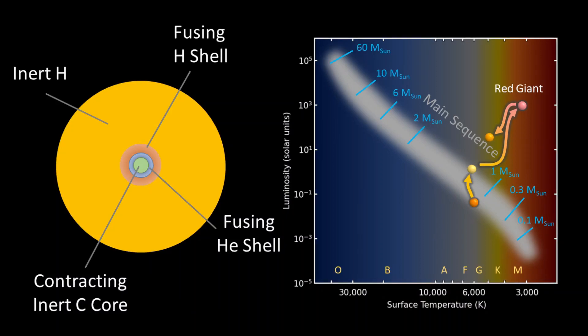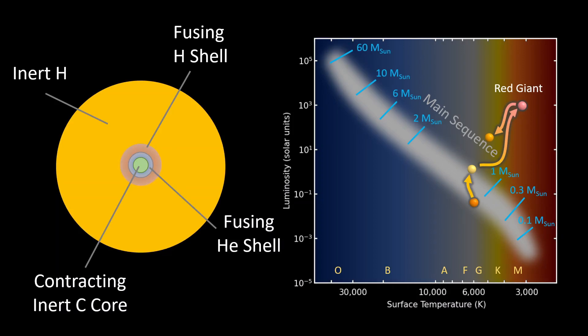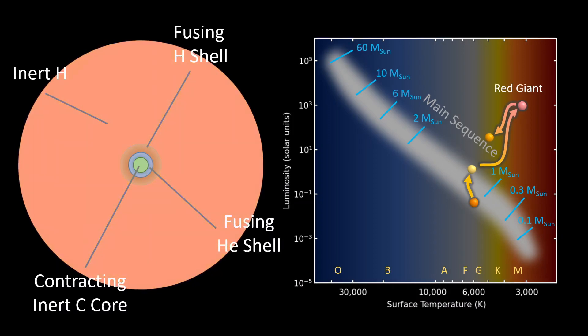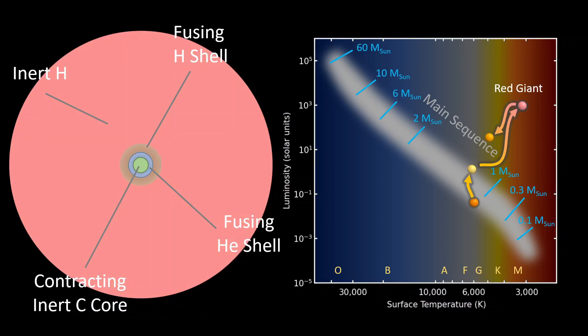The inert carbon core is surrounded by an active shell with helium fusion, surrounded by a shell of inert helium. Farther out, there is a shell of fusing hydrogen, and finally, the extended outer layer of inert hydrogen. The energy from the two active shells flows to the outer layers that begin a second period of expansion. Back to the red giant domain on the HR diagram, the star moves up and to the right. This will be a brief and final burst of glory of the star.